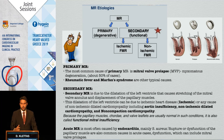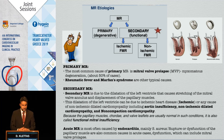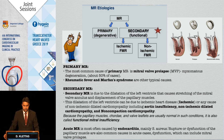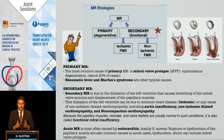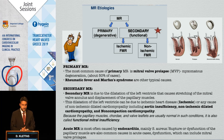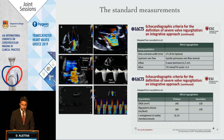So primary and secondary — this is very important. The most important thing when we investigate the mitral valve is to see if there is a pathology in the leaflet, so if it is an organic amount, as we call it, the primary mitral regurgitation. The most common cause is mitral valve prolapse.